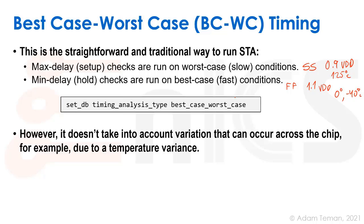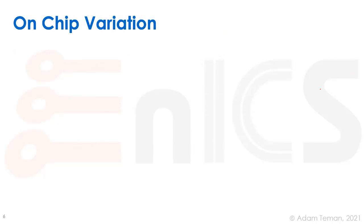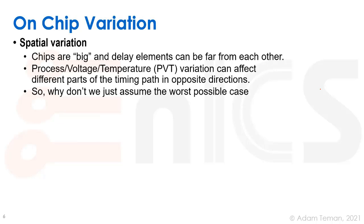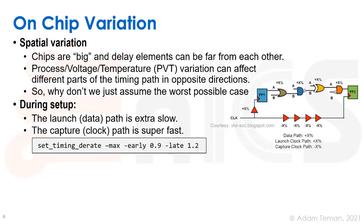But that doesn't take into account all kinds of variation that can occur across the chip. For example, temperature variance can be really different at different areas of the chip — areas that are idle versus areas close to a high-power processor. That brings us to the concept of on-chip variation, or OCV. OCV is a spatial variation: chips are big and delay elements can be far from each other. Process, voltage, and temperature (PVT) variation can affect different parts of the timing path in opposite directions, affecting different gates across the chip differently. As chip designers, we always have to go for the worst possible case — be very pessimistic — and we do this with something called derating.